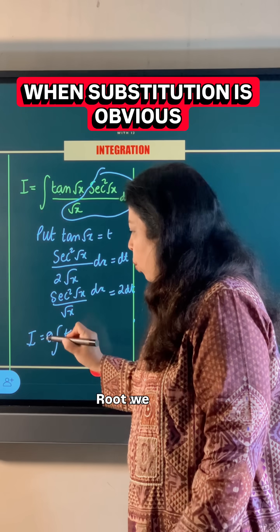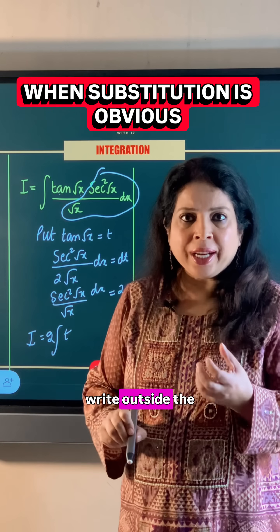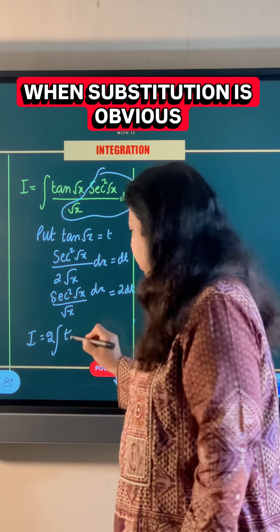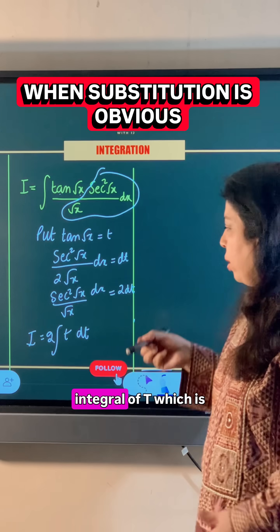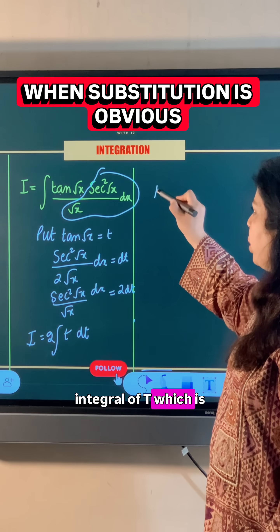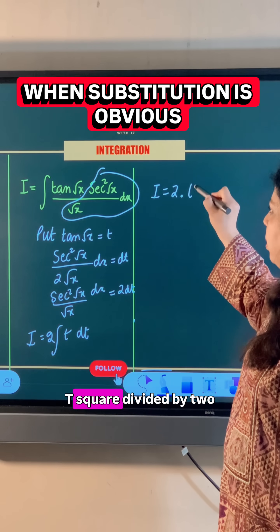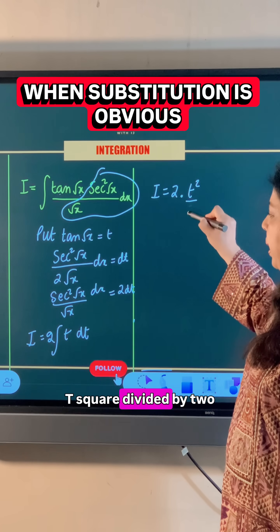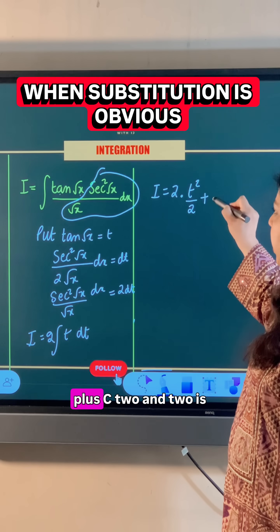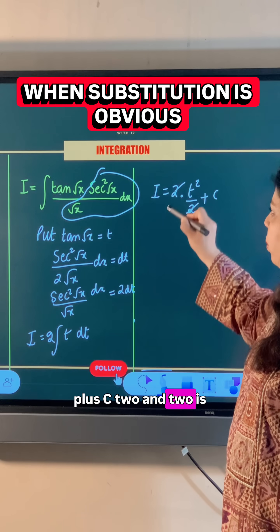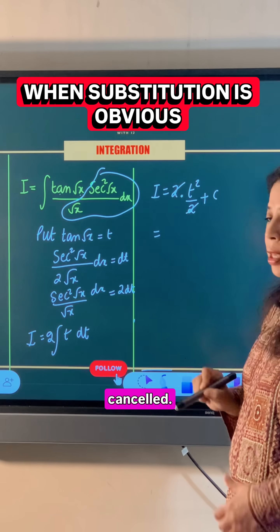We write the 2 outside the integral. The integral of t is t² / 2 plus C, and the 2s cancel.